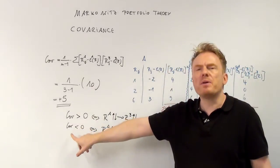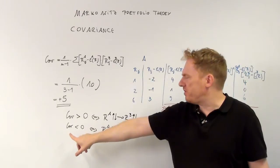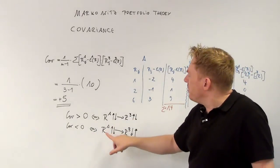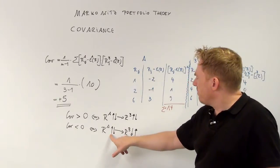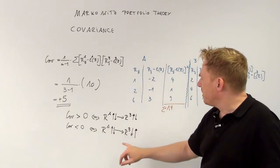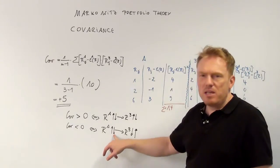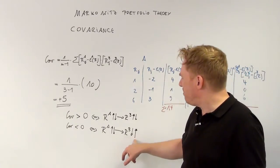If the covariance is strictly inferior to 0, they move in different directions. This way: A goes up whereas B goes down, or A goes down and B goes up.